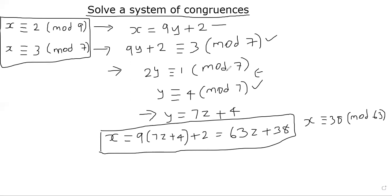But the fact is that you can find a solution, but the solution involves 63. And if you look at 9 times 7, it is also 63, which is going to help us to generalize this into a more formal theorem for a system of congruences.